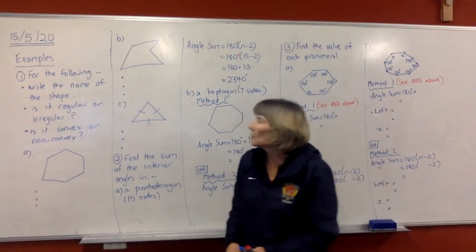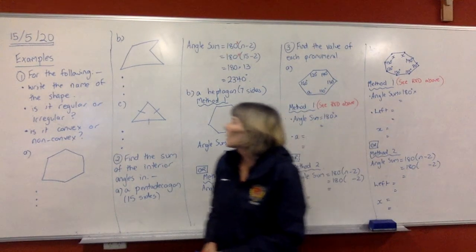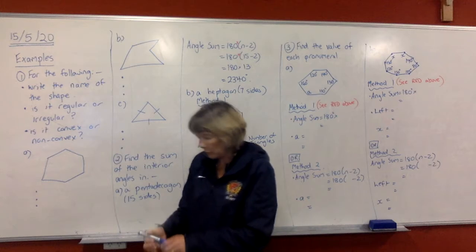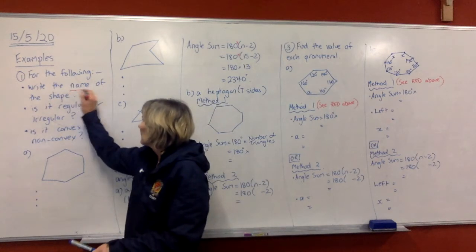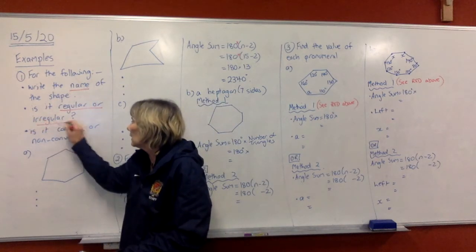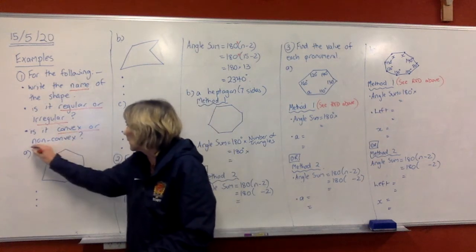Okay, so we're going to continue with some examples now. In this first one, we're just going to name the shape, say whether it's regular or irregular, and say whether it's convex or non-convex.